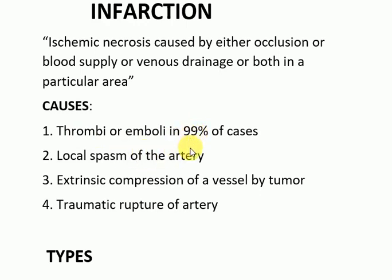Number two is local spasm of the artery. If there is spasm or constriction of the artery, it leads to decreased blood flow, causing ischemic necrosis or infarction. Number three is extrinsic compression of a vessel by a tumor, which leads to decreased blood flow and infarction. Number four is traumatic rupture of an artery.